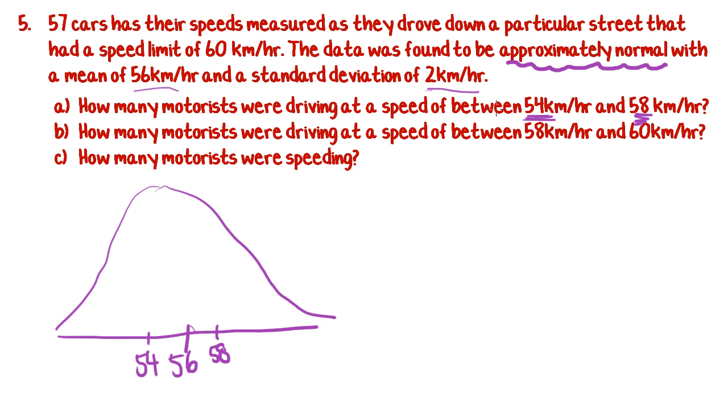How many motorists were travelling at a speed between that and that? I've found these intervals where 68% of the data lie. But I can't give 68% as an answer because they want to know how many motorists, how many of the actual people. There were 57 cars all up, and 68% of them were travelling between that speed. So I need to know 68% of 57. On your calculator the buttons are 68 divided by 100 times 57.